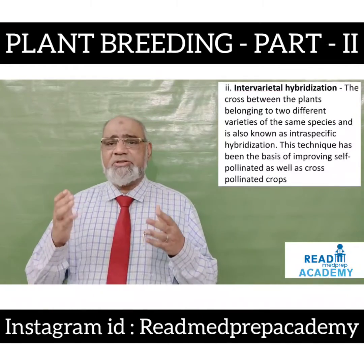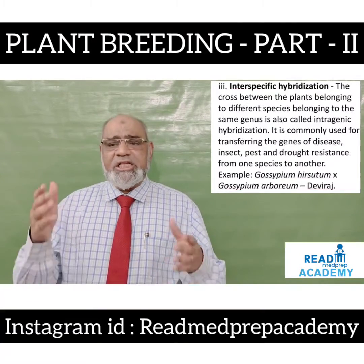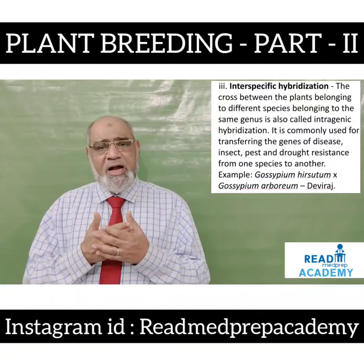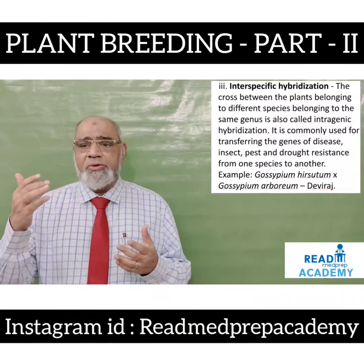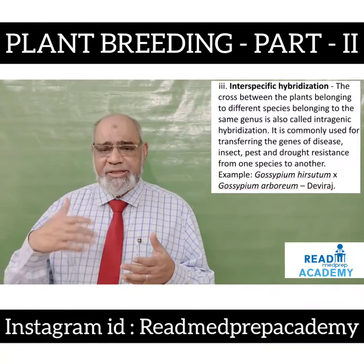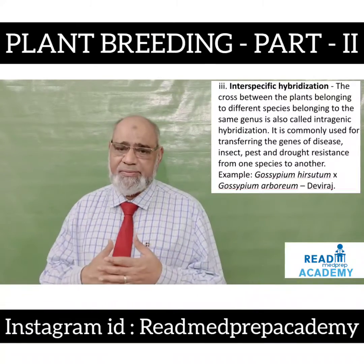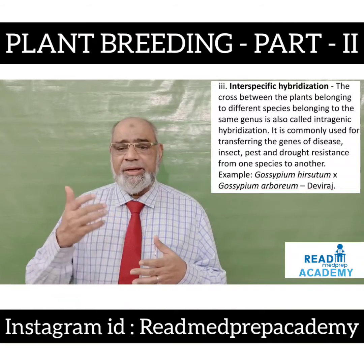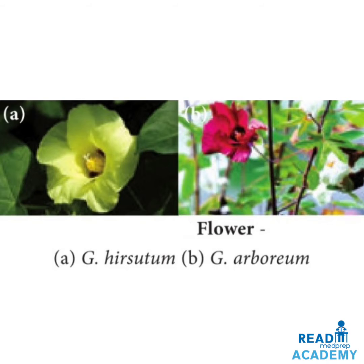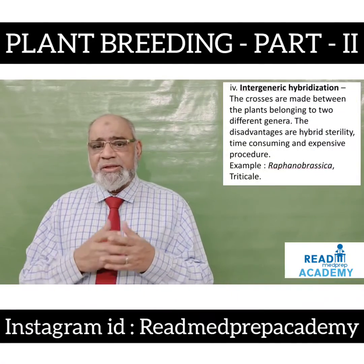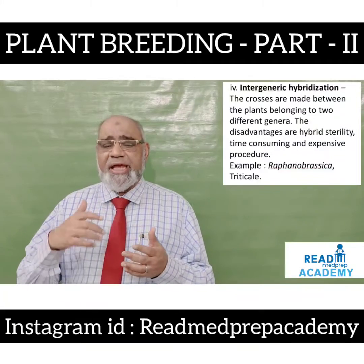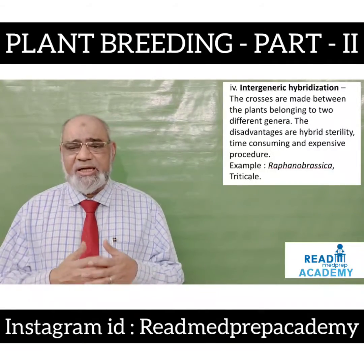Intraspecific hybridization: the cross between plants belonging to different species of the same genus is called intrageneric hybridization. It is commonly used for transferring genes of disease, insect, pest and drought resistance from one species to another. For example, Gossypium hirsutum crossed with Gossypium arboreum. Intergeneric hybridization: crosses are made between plants belonging to two different genera. The disadvantages are hybrid sterility, and that it is a time-consuming and expensive procedure. Examples include Raffanobrassica and Triticale.